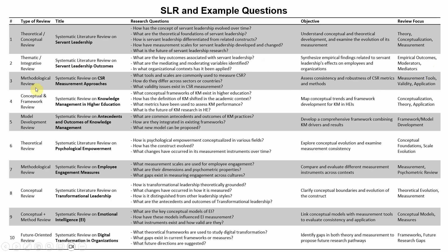There could also be a methodological review — for example, a systematic review on CSR measurement approaches. Here, the focus is on measurement tools, validity, and their application. The research questions would be: What tools and scales are commonly used to measure CSR? How do they differ across sectors or countries? And what validity issues exist in CSR measurement? The objective is to assess the consistency and robustness of CSR metrics and methods.